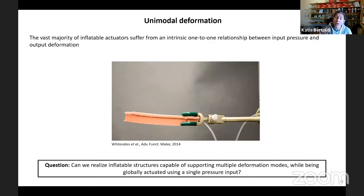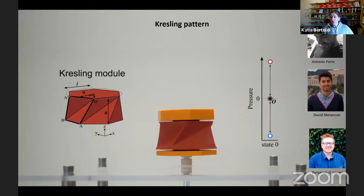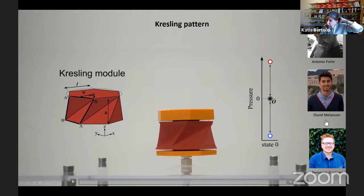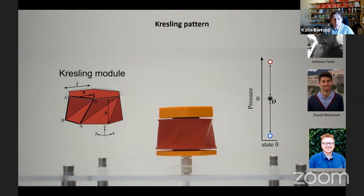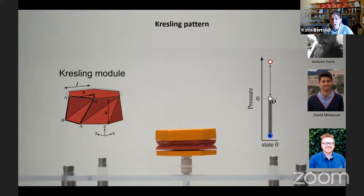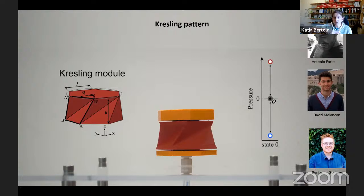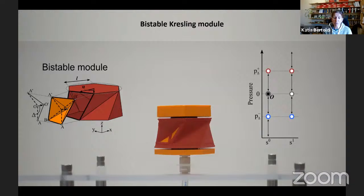This project was done by my former postdoc Antonio, now a faculty at University of London; former student David, who will start as independent faculty at Concordia University; and Ben, now a faculty at Leuven University. Our starting point is a Kresling module — a very popular and simple origami module. We 3D-printed the module and actuated it by inflation. When we inflate it, it deploys — unfolding, twisting, and elongating. When we deflate, it collapses — and it's monostable: as soon as we remove the input pressure, it goes back down. So now we want to play with multistability. We want to turn this Kresling module into a multistable structure.